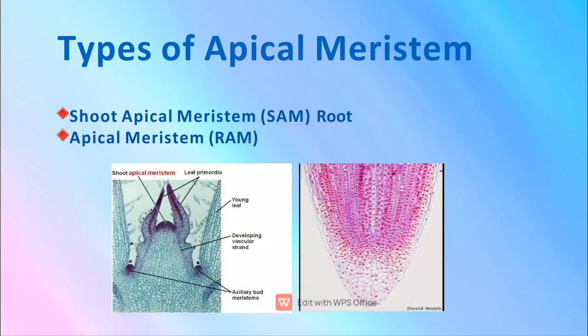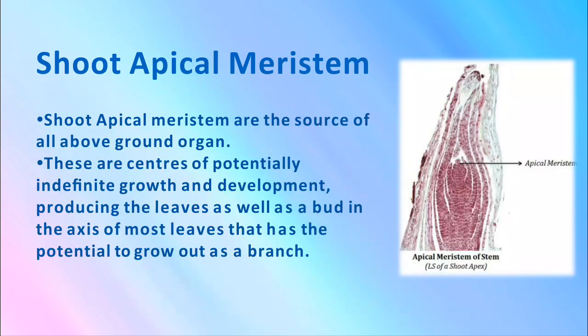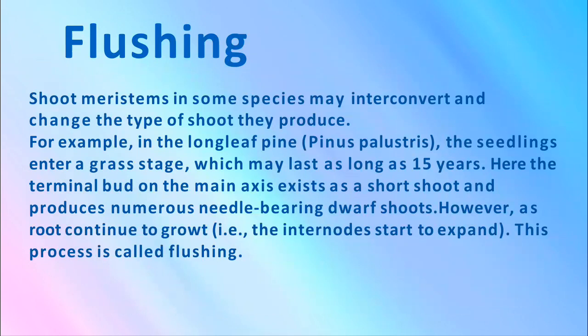Types of apical meristem: shoot apical meristem and root apical meristem. Shoot apical meristems are the source of all above-ground organs. These are centers of potentially indefinite growth and development, producing the leaves as well as a bud in the axil of most leaves that has potential to grow out as a branch. In some species, shoot meristems may interconvert and change the type of shoot they produce.